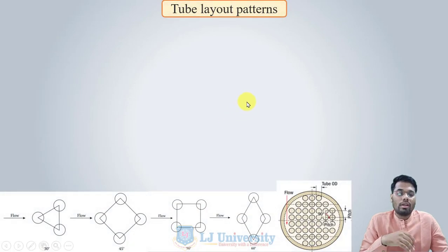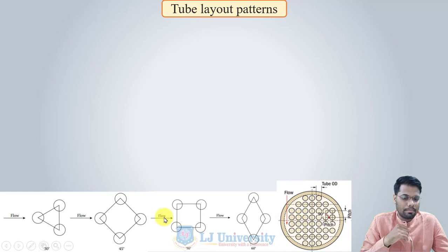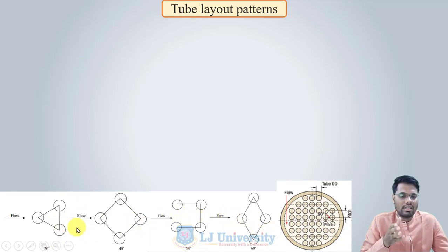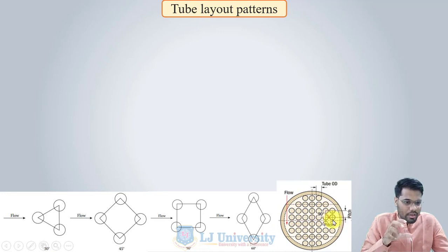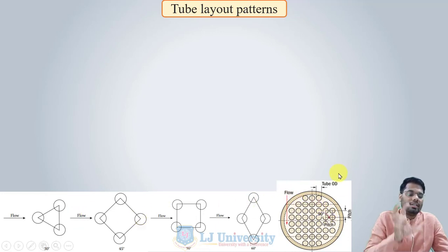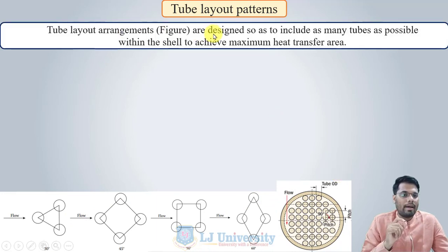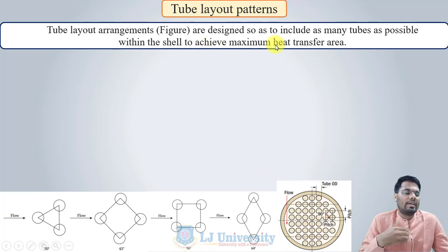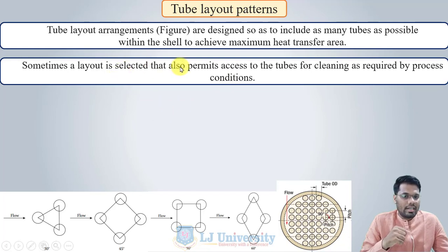Tubes are generally arranged in patterns at angles of 30°, 45°, 90°, and 60°. As seen in the figure, the circle represents the shell and the smaller circles represent the tubes inside. In one layout the centers of four tubes are at 90° to each other. Tube layout arrangements are designed to include as many tubes as possible within the shell to achieve maximum heat transfer area, and sometimes the layout also permits access to tubes for cleaning as required by process conditions.